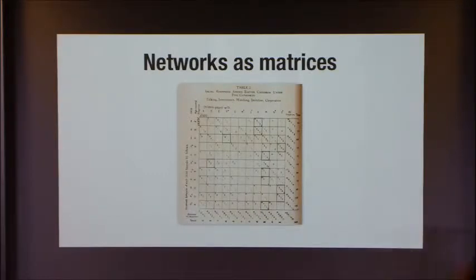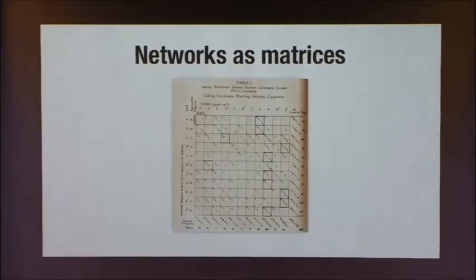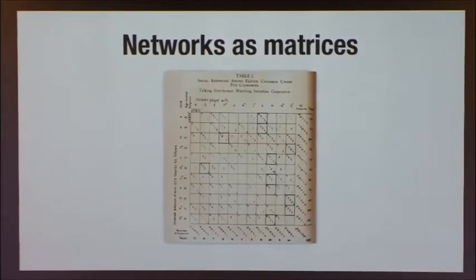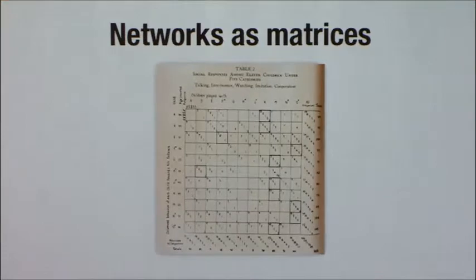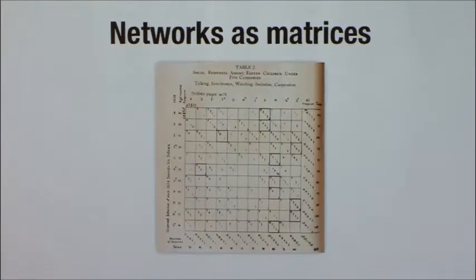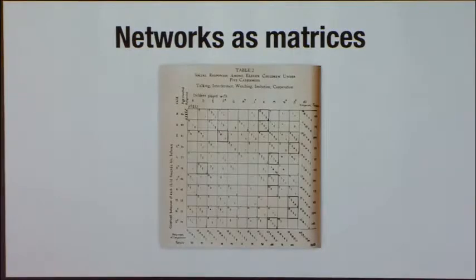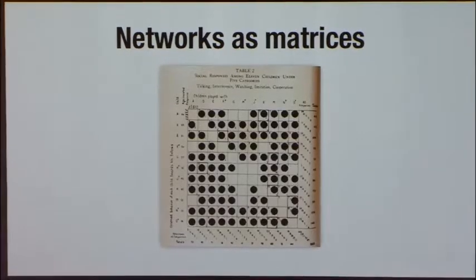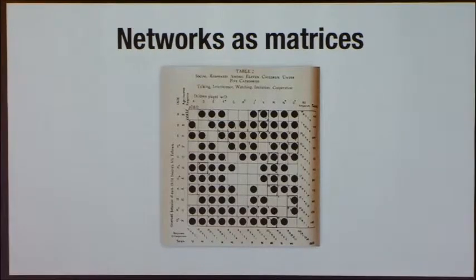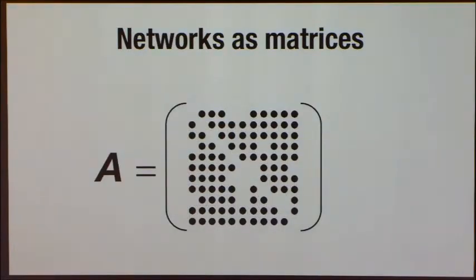There's actually some interesting stuff here. They have five different attributes for each of the links, which is how the kids were playing with each other and how many times they played each other. If you just blink and say we're going to put an edge where there was any interaction at all, you get this really dense network. Throughout the rest of the talk, we're going to take networks and look at them as matrices.